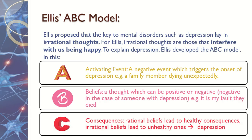So first of all, Ellis' ABC model. He suggested that depression is to do with irrational thoughts, and that it specifically interferes with us being happy. He said there are three steps. The first is an activating event — anyone might have one. It could be end of year exams, a family member dying, a loss of a pet, anything at all. I'm going to use the example of a family member dying unexpectedly.